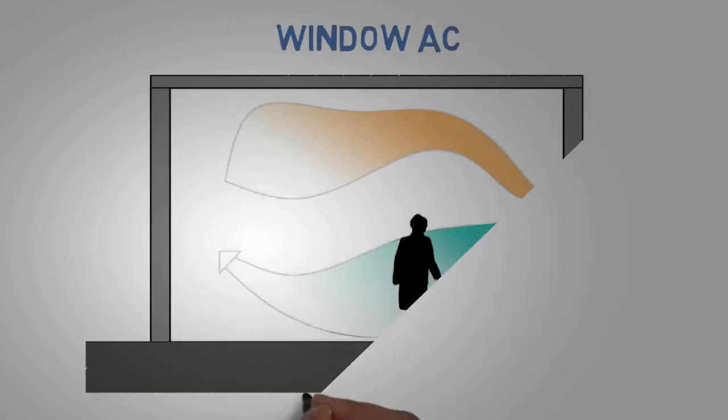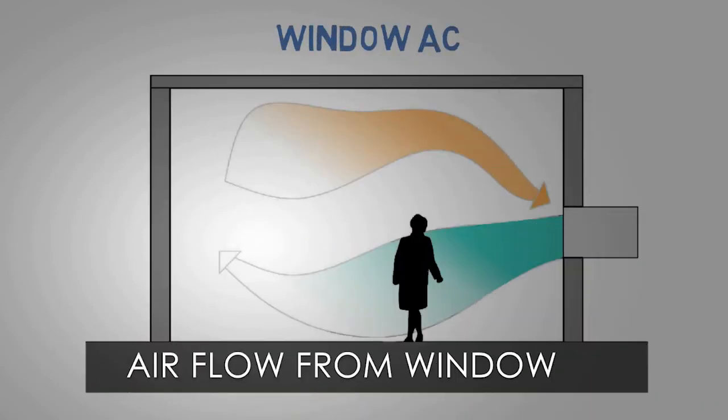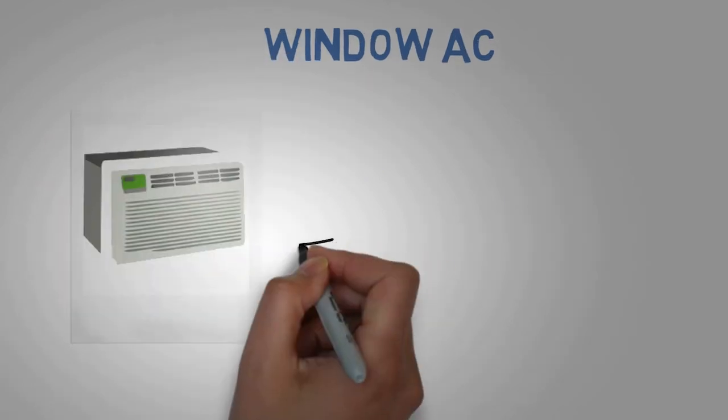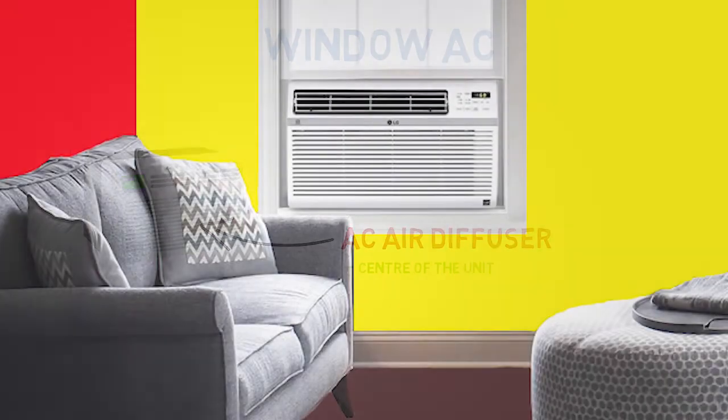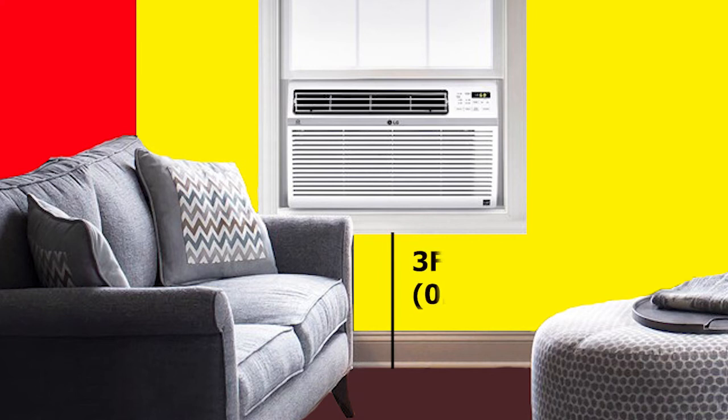Window AC: The AC air diffuser of window AC units are at the center of the unit. Therefore, the ideal height to fix a window AC is at 3 feet to 4 feet.